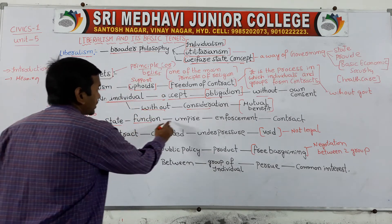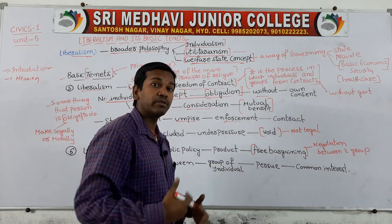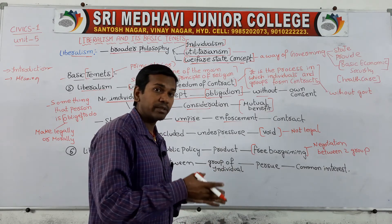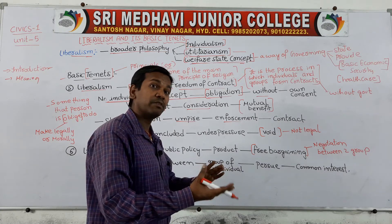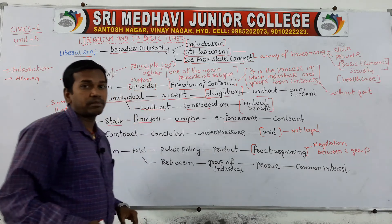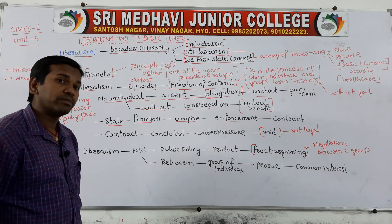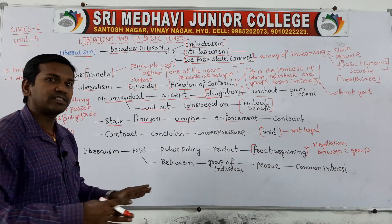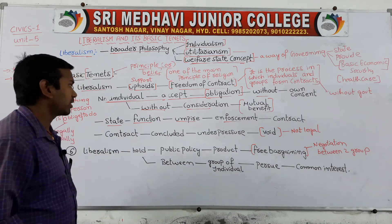States function in the form of an umpire — enforcement of law. States function just like an umpire to enforce the law. For example, in a match you can see how the umpire will function — how the rules and regulations are made to fulfill the game and players should perform accordingly. Similarly, states should enforce the law; it is the responsibility of the state.